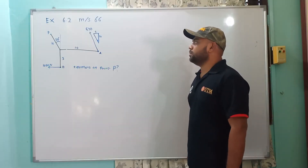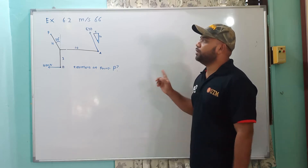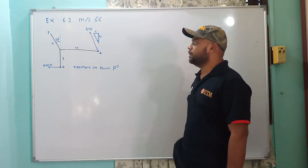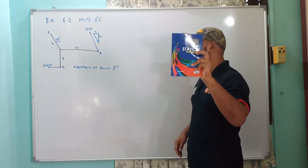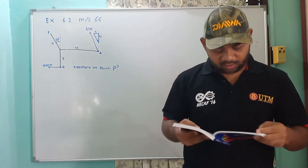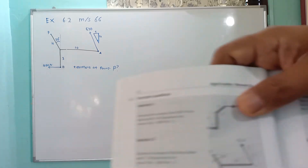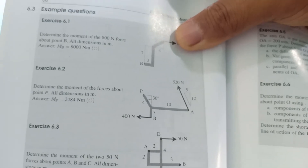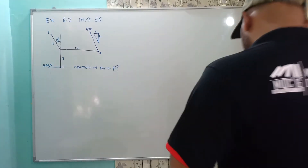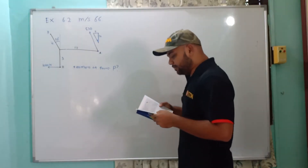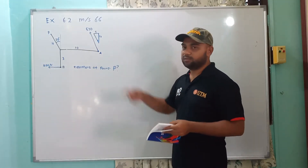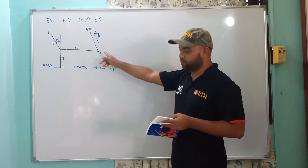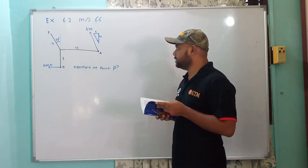Assalamu'alaikum warahmatullahi wabarakatuh and a very good day to everyone. Today we will continue by looking at exercise 6.2, page 66 from this book. The question asks us to determine the moment of the forces — we have two forces — about point P. So the moment about point P is created by these two forces. All dimensions are in meters.